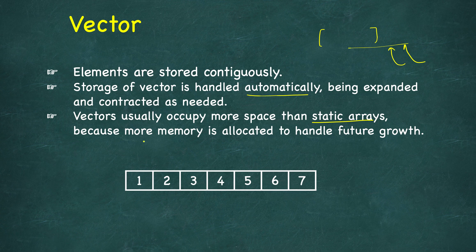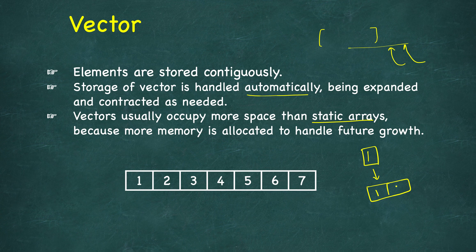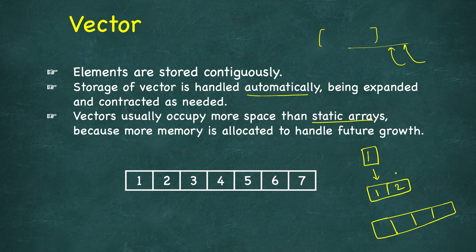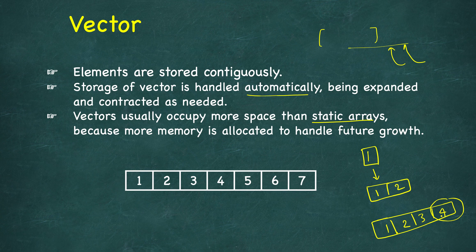Vectors occupy more space than static arrays since new memory allocation doesn't happen every time. For example, if you have one element the capacity is one. When you insert a second element it allocates space for two. When you insert a third, there's no space, so it allocates four — double the size — and copies the elements. When you insert a fifth element it will most likely allocate a space of eight. This doubling strategy is how dynamic-sized arrays are implemented.